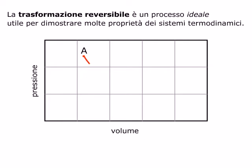Se dunque la trasformazione da A a B è quasi statica e non vi è dispersione di energia, è possibile partire dallo stato B e ritornare allo stato A semplicemente ripetendo in ordine inverso la catena infinita degli stati di equilibrio intermedi.